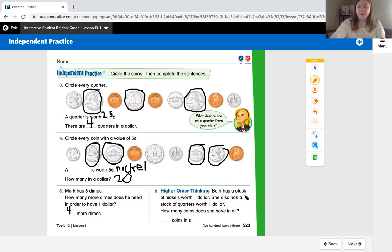Our last one says Beth has a stack of nickels worth a dollar. If I look back to my problem before, I know that 20 nickels equals a dollar. She also has a stack of quarters that are worth a dollar. And if I look up here, I know four quarters is worth a dollar. How many coins does she have in all? If I use the information already on my page, I know that all I need to do to figure out how many coins Beth has is add 20 plus four, and 20 plus four we can do that in our brains, it's 24.